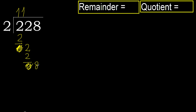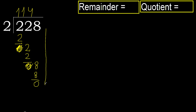8. 2 multiplied by 4 is 8 — 8 is not greater. Subtract. Next — there is no next number, therefore finish it. Ok, 228 divided by 2 is 114.